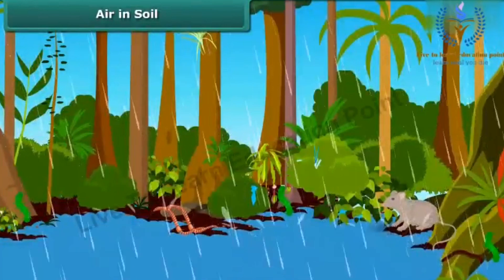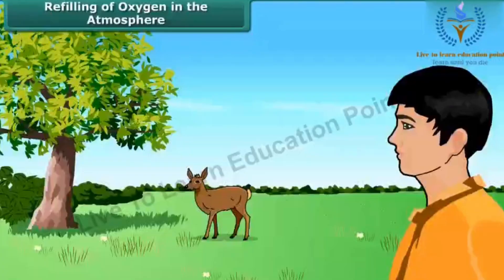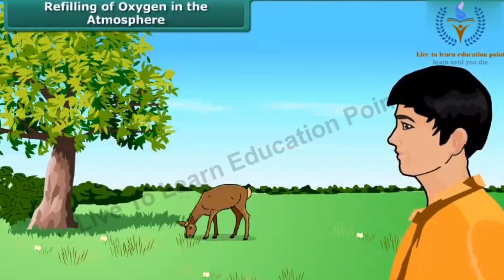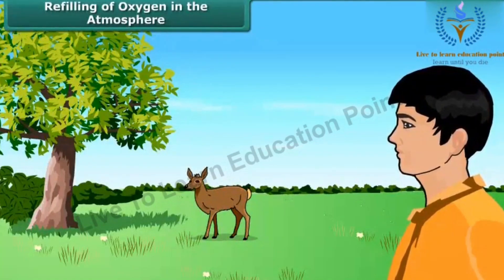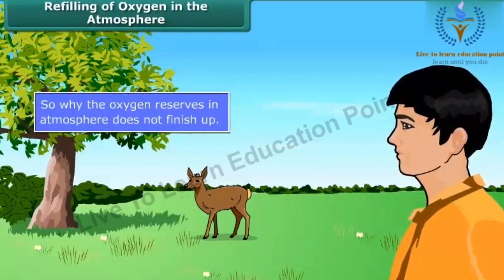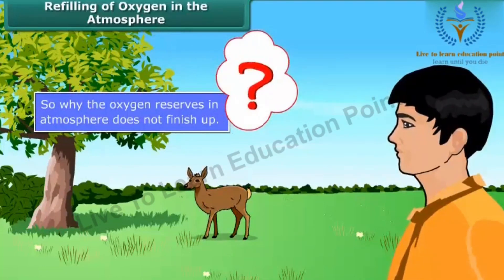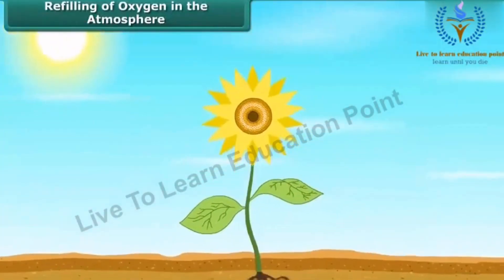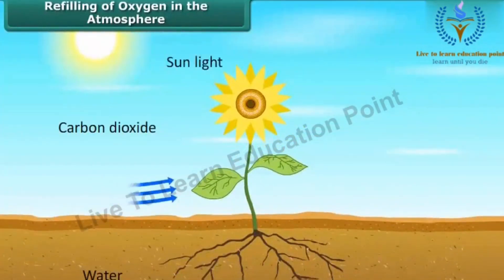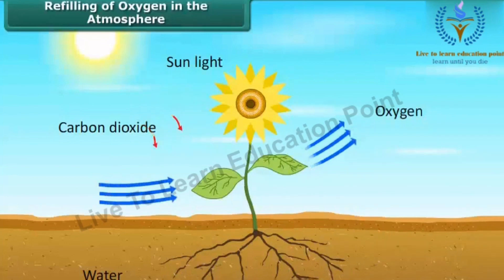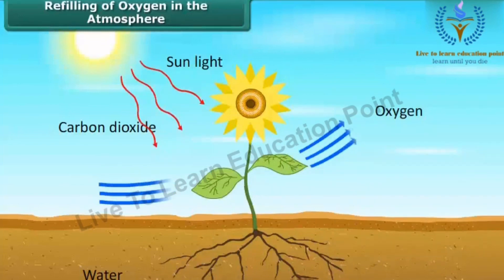During the rainy season, when water fills the burrows and holes, these animals have to come out for respiration. Several billions of humans and other organisms consume a huge amount of oxygen from the atmosphere every day — so why don't the oxygen reserves finish up? During photosynthesis, plants produce oxygen and release it into the atmosphere. Plants consume oxygen for respiration too, but they produce more than they consume, silently saving us from dying.